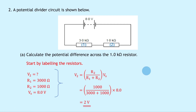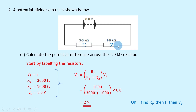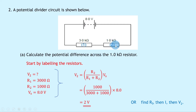A slightly longer alternative method would be to first find the total resistance, which is 4000 ohms. Then find the current using I equals V over R: 8 volts divided by 4000 ohms. Then find V2 using V equals IR with the 1000 ohm resistance. But that is a lot longer than just using the potential divider formula directly.